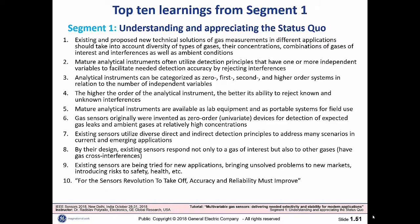In different applications, you pay attention to what can happen. Mature analytical instruments have all kinds of readouts, and the key point is that they have independent variables that give performance to be more selective than conventional sensors. Those analytical instruments are categorized as zero-order, first-order, second-order, and higher, depending on how many independent variables you have. The higher the order of your instrument, the better their ability to reject not only known but also unknown interferences.